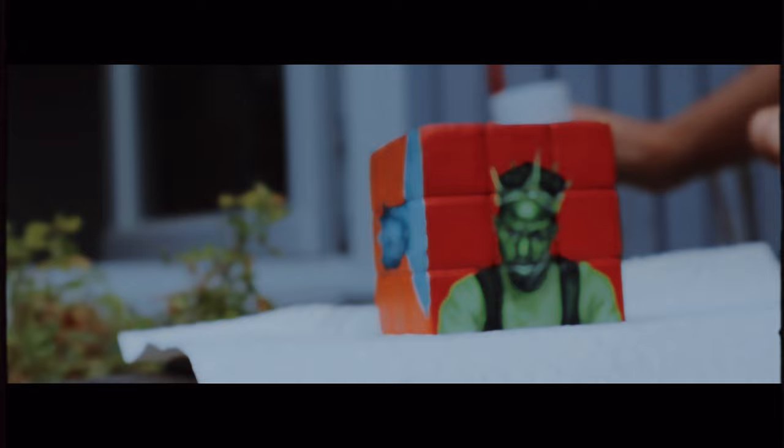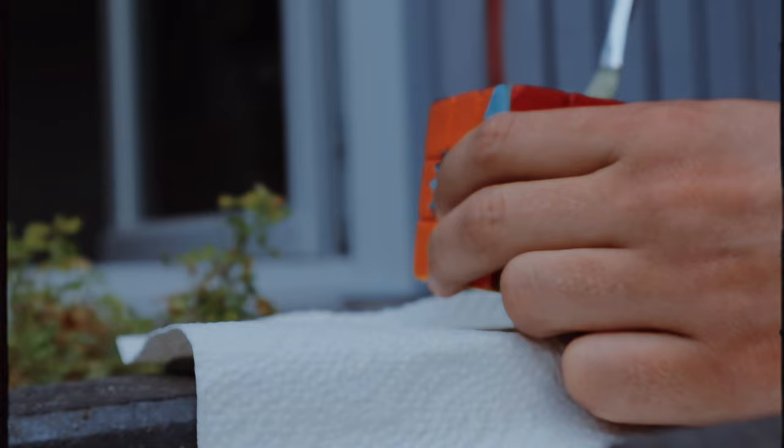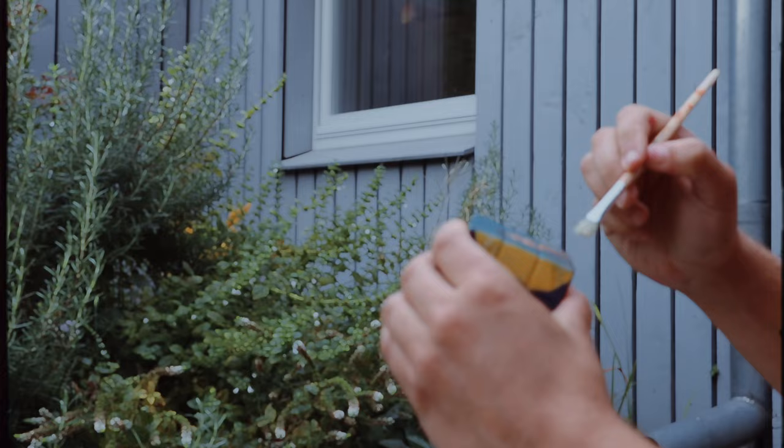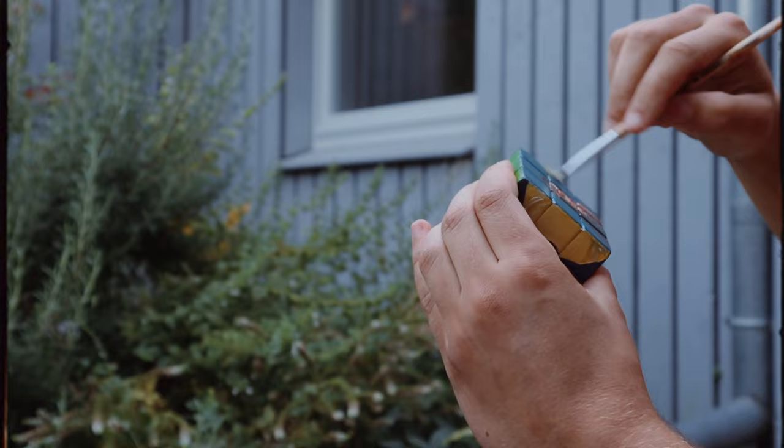And here we are at the very last step of painting this Rubik's cube, and that is to add another layer of protective seal over it, to just seal off all the paint, make it water resistant and just time resistant. Finishing off the process.